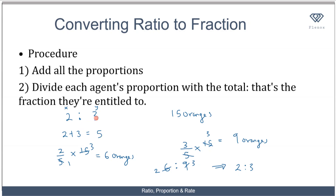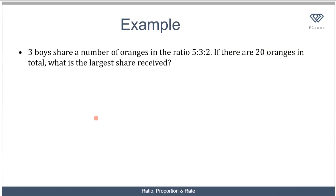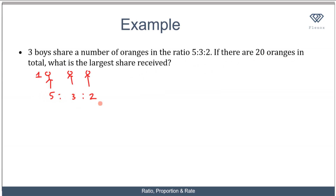So you should take note of how to find the amount that someone is entitled to based on their ratio and proportion. Let's solve an example: 3 boys share a number of oranges in ratio 5 ratio 3 ratio 2. If there are 20 oranges in total, what is the largest share received? We know it is the first person because he has the greatest proportion, which is 5. The first step is to add the total number of proportions: 5 plus 3 plus 2 equals 10.